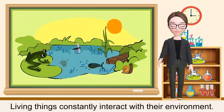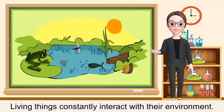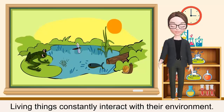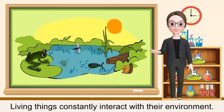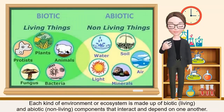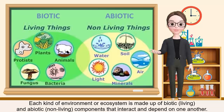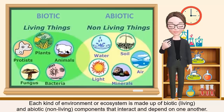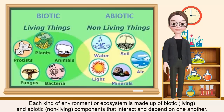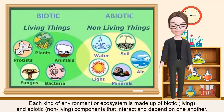Take a look at this picture. Can you see the living things in this picture? What about the non-living things? Living things constantly interact with their environment. Each kind of environment or ecosystem is made up of biotic or living and abiotic or non-living components that interact and depend on one another.